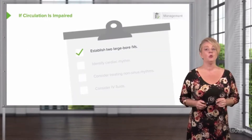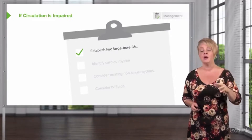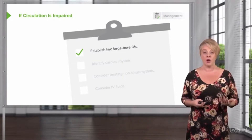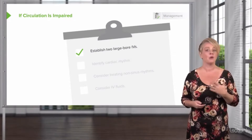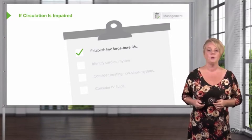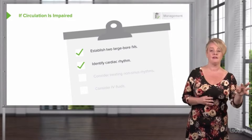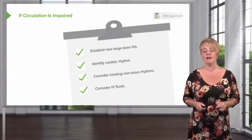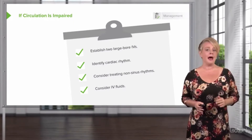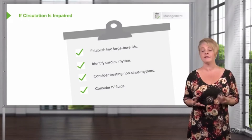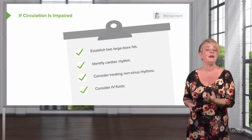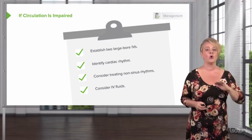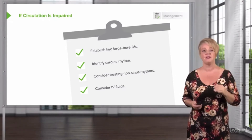Anytime we suspect a problem with C, we want to make sure we get two large-bore IV catheters — not one, but two — so we have the ability to rapidly infuse fluid or blood products if needed, and a backup in case one infiltrates or falls out. We want to look at the monitor and differentiate non-sinus from sinus rhythms, and if they have a non-sinus rhythm, think about treating it. Lastly, consider IV fluids. Not every patient with a circulatory abnormality needs them, but the vast majority will benefit. In cases like cardiogenic shock where the heart isn't squeezing adequately, fluid won't help — but in most cases, optimizing intravascular volume is the first step in stabilizing C.